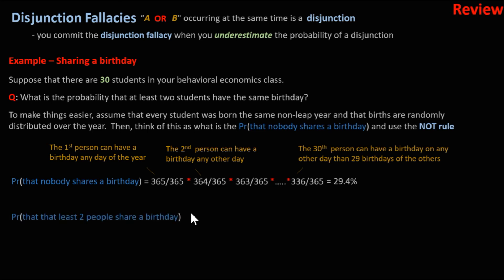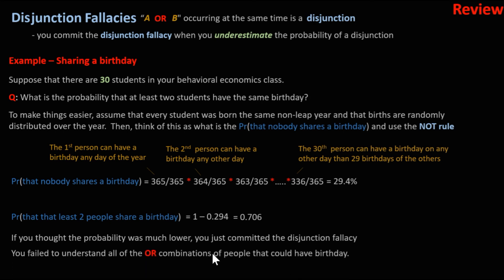Now what we can do is determine what's the probability that at least two people share a birthday. That's one minus the probability that nobody shares a birthday, which is 0.294. This equals 0.706, which is 70.6%. So if you thought the probability was much lower, you just committed the disjunction fallacy.